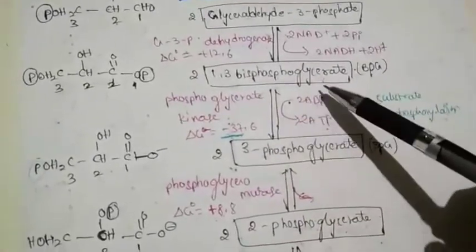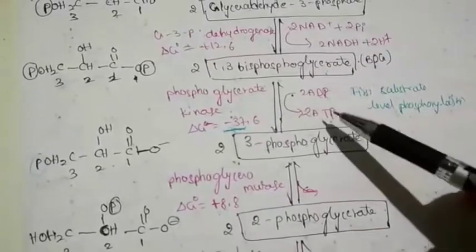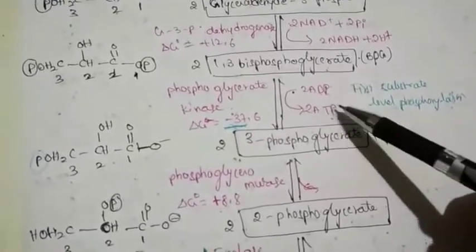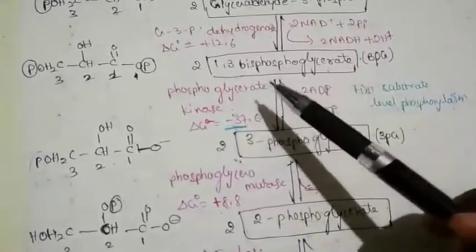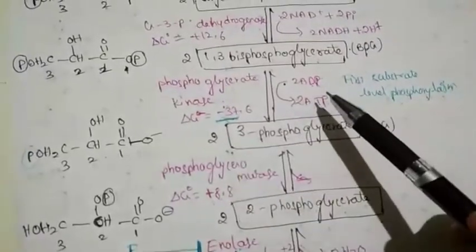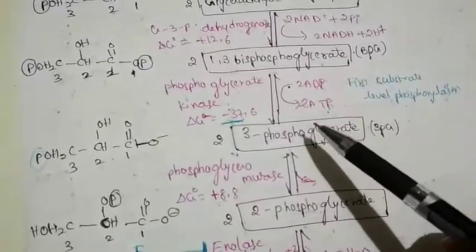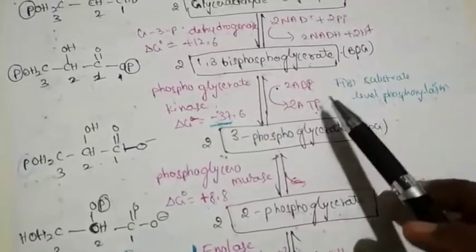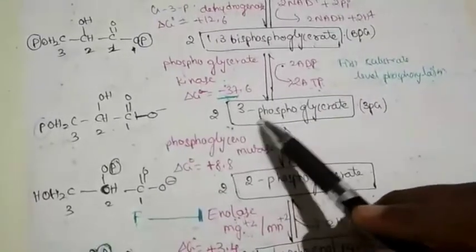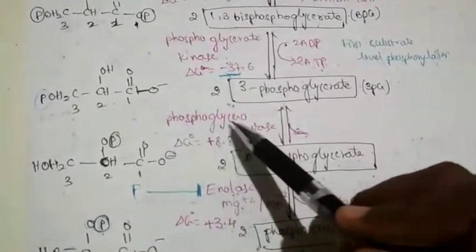In the seventh step, 1,3-bisphosphoglycerate is converted into 3-phosphoglycerate, also a three-carbon compound. Here two molecules of ATP are produced, which compensates for the two ATPs used in the preparatory phase. The enzyme involved is phosphoglycerate kinase. This is the first substrate-level phosphorylation. In the eighth step, 3-phosphoglycerate is converted into 2-phosphoglycerate by the enzyme phosphoglycerate mutase.